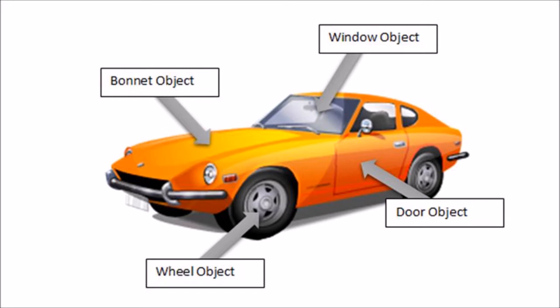Let us consider one more example. We are considering an object known as college. We can see other classes or objects like student object, teacher object, faculty object, office object, administrative objects, and many other objects. All these objects are aggregated to form a common large object or large class known as college. So this aggregation principle is one of the important points to be noted in object-oriented principles.